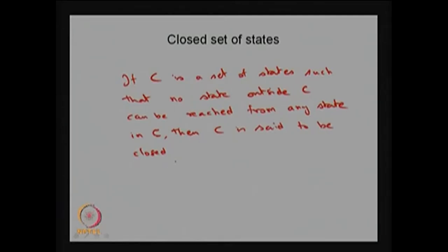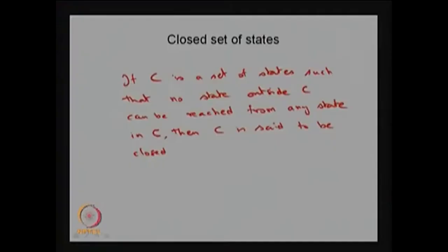We can combine the class property with the closed set property. If both properties are satisfied — the states communicate with each other as well as the closed property is satisfied — then we can say that it forms a closed communicating class. Any subset in the state space S, if each element within the set communicates with each other and satisfies the closed property, then that collection is a closed communicating class.